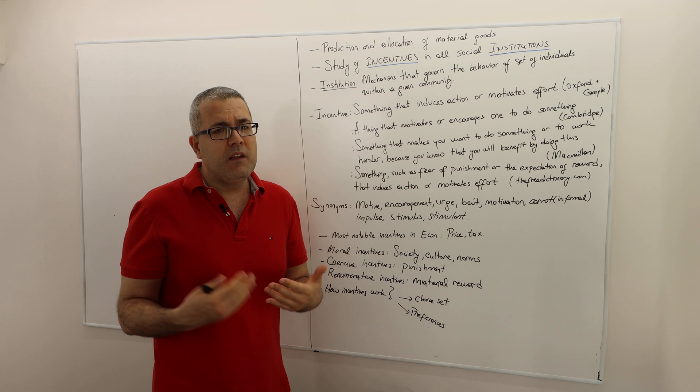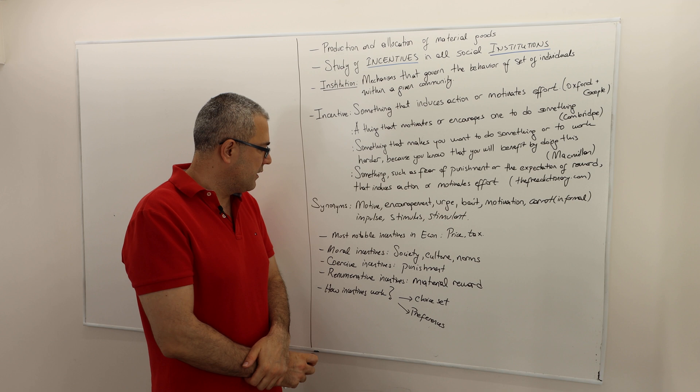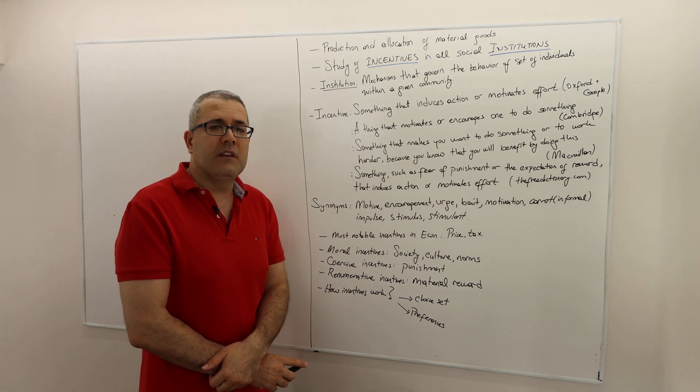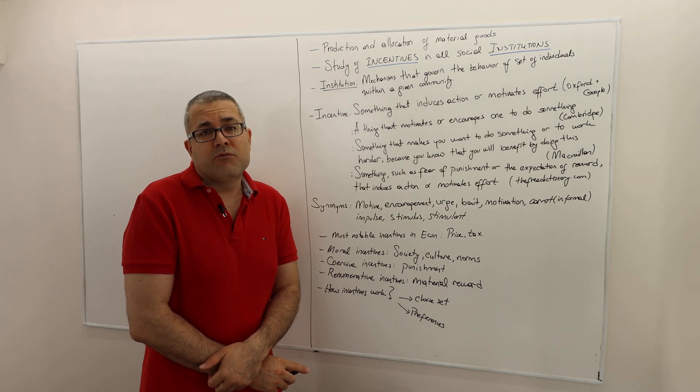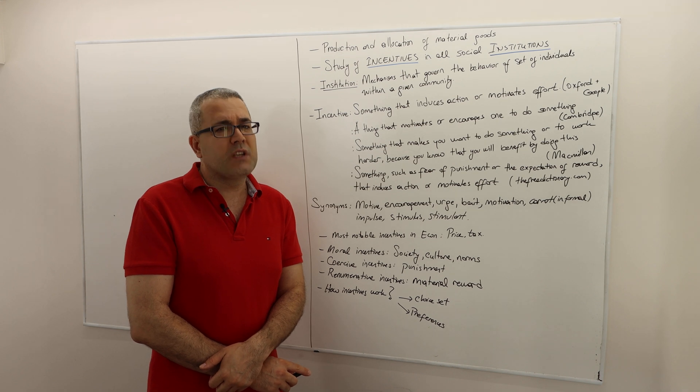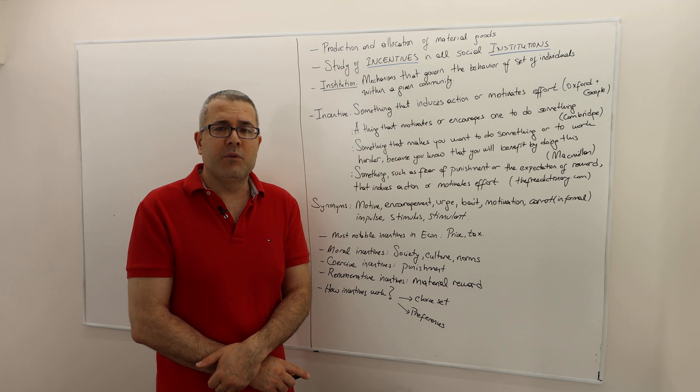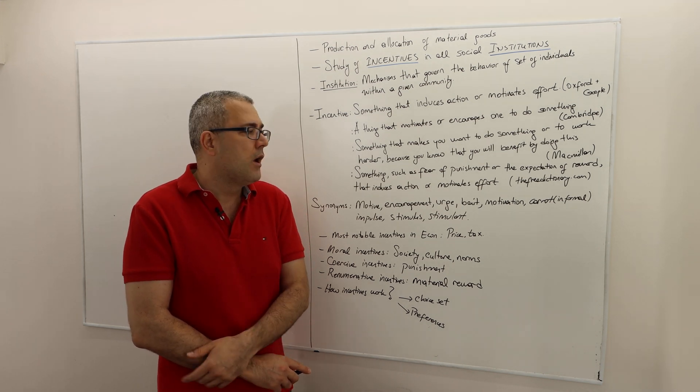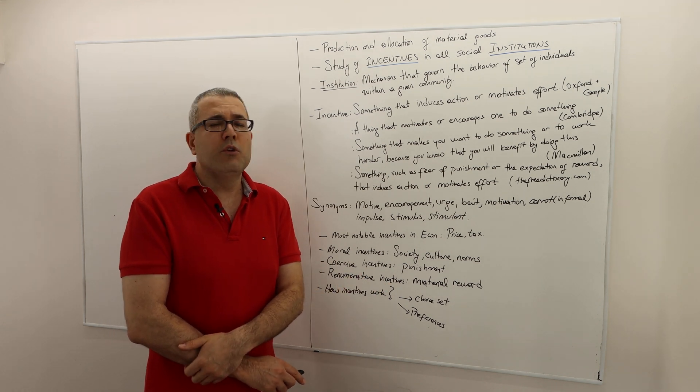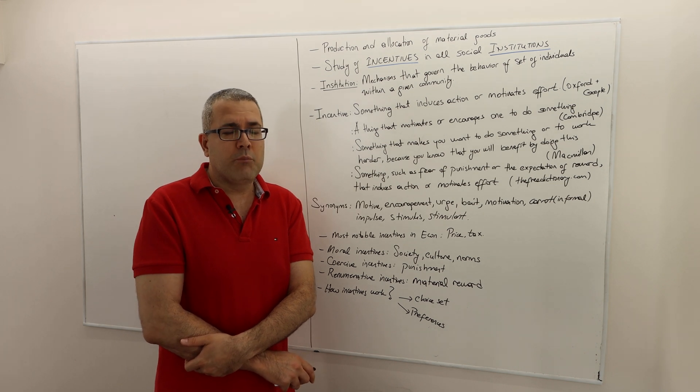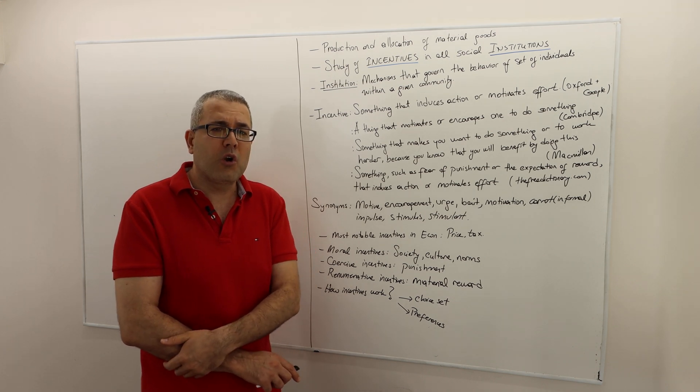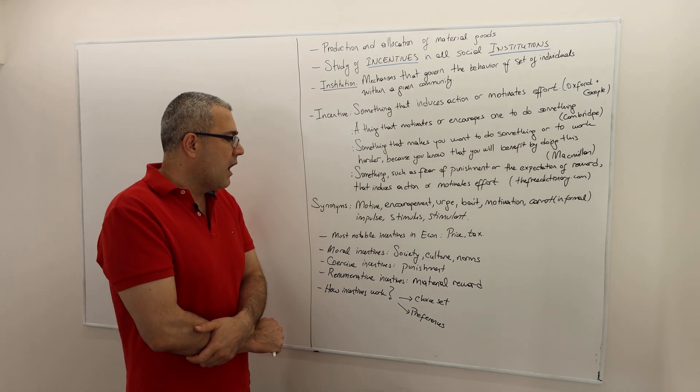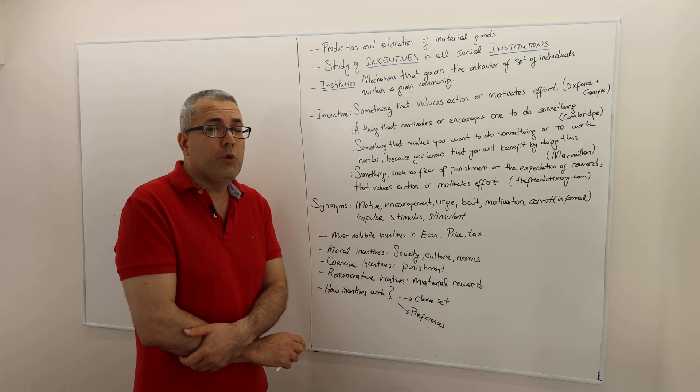To give an example, price and tax are highly notable incentives in economics. The increase in price usually makes you not choose something you would normally choose if the price was lower. Tax, for example, raising taxes usually reduces production because it becomes more costly for firms to produce that certain good. Or if it's a consumption tax, the consumers consume less because the prices are now higher because of the higher taxes.